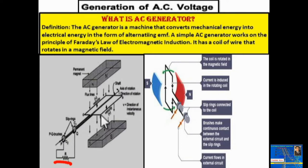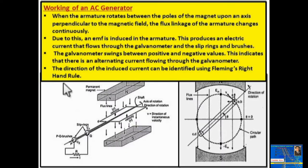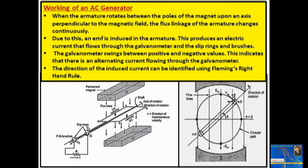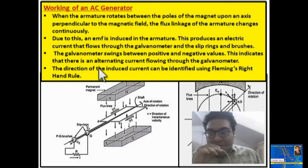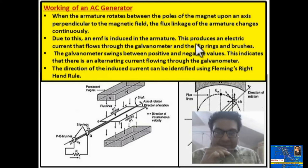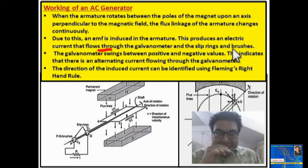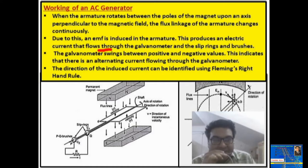The direction of current will be outward because this is the generator and EMF is induced inside the rectangular coil. Current flows in the external circuit. Working: when the armature rotates between the poles of the magnet upon an axis perpendicular to the magnetic field, the flux linkage of the armature changes continuously, and due to this an EMF is induced in the armature. This produces an electric current that flows through the galvanometer, slip rings, and brushes.